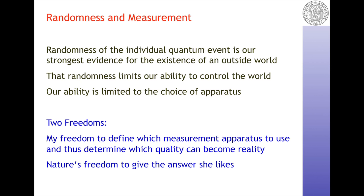The next transparency on random measurement points out something close to my heart. When you look at the quantum measurement procedure, we observe — and this is part of the famous measurement problem, or measurement event — that the result is random. To me, the randomness of the individual quantum event is our strongest evidence for the existence of an outside world. Because it cannot be described on the basis of what we know and the information we have — rather, new information comes in, and that can only come in from the outside.